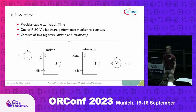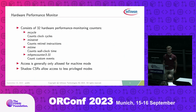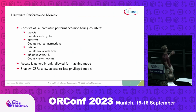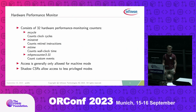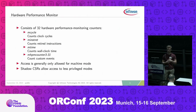The machine timer interrupt can start the execution of a trap handler in the core. The hardware performance monitor consists of multiple counters including mCycle, mInstret which counts retired instructions, mCycle which counts clock cycles, mTime, and mHPM counters which can count custom events configured by the core architects. Access to these timers is generally only allowed for machine mode.